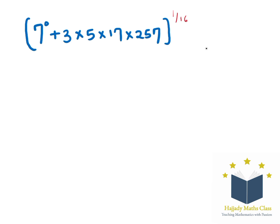The first thing we need to solve is 7 to the power of 0. Anything to the power of 0 is going to be 1. So here I'm having 1 plus 3 multiplied by 5 multiplied by 17 times 257, all to the power of 1 over 16.